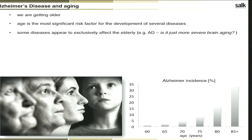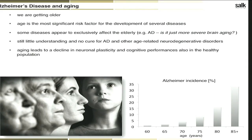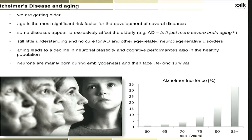Some people age faster, some slower, and that's why some get Alzheimer's at 60 or 80 while others are fine until 100. We still have very little understanding of aging and age-related diseases, and no cure to stop, halt, or reverse progression of AD, ALS, or Parkinson's. Even in healthy populations, aging leads to decline in neuronal plasticity and cognitive performance. Our neurons are as old as we are, born during embryogenesis, and must survive and function our entire lives without much regeneration.